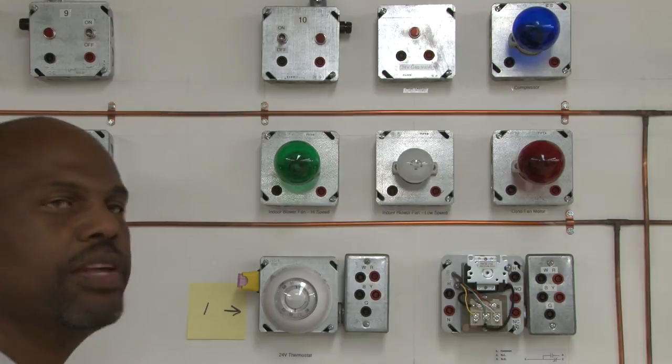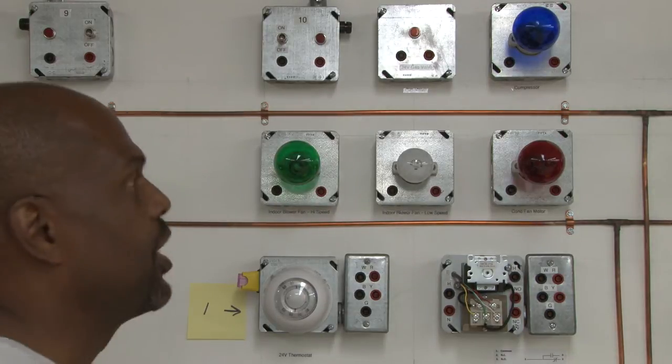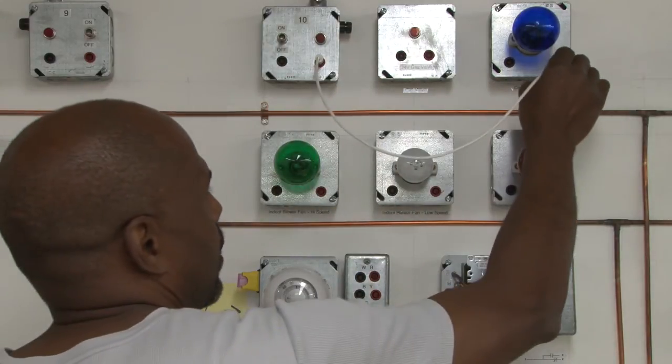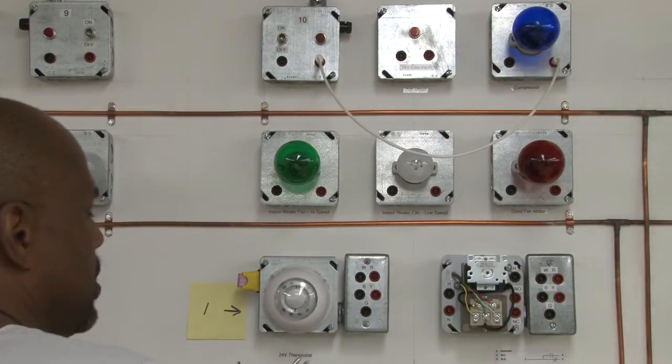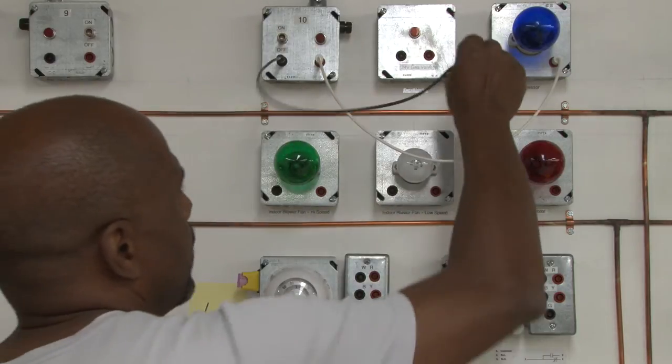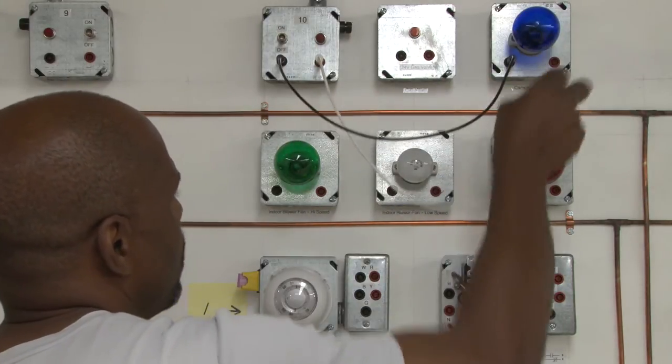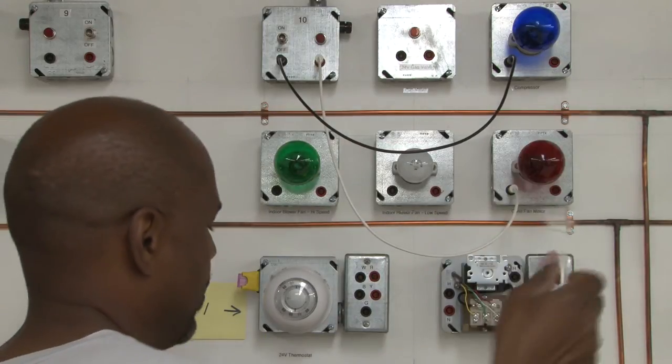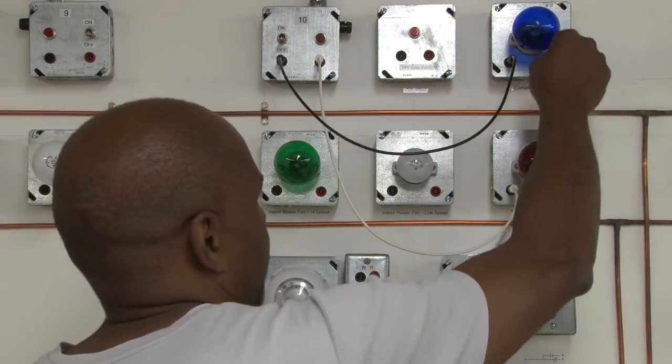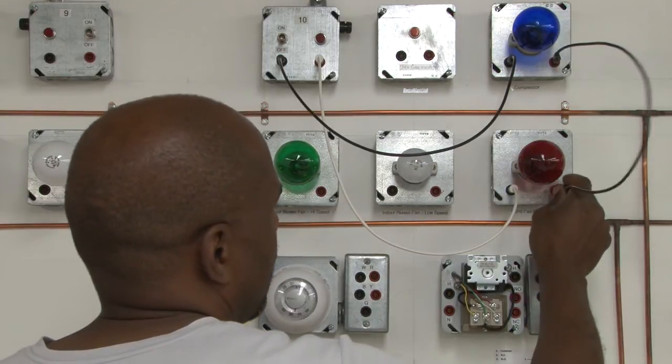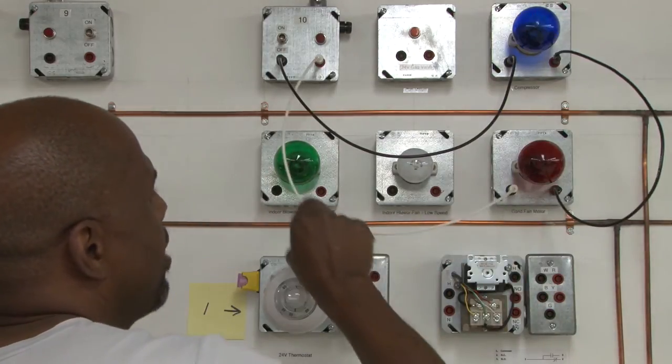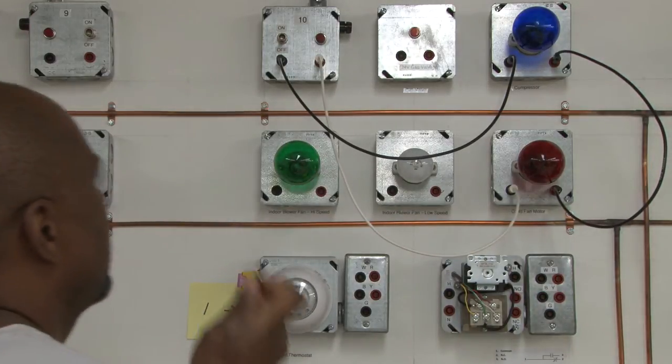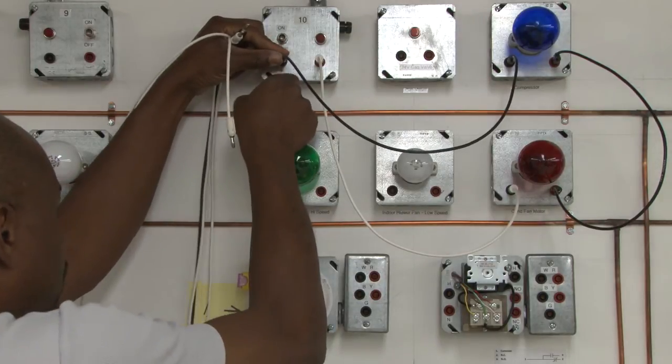We're going to start with the neutral side. We'll start changing from the hot side, and we're going to jump through, come out of the first bulb, go into the second bulb. Now we have a series circuit. Now I would still like to put it in parallel to the next two bulbs.